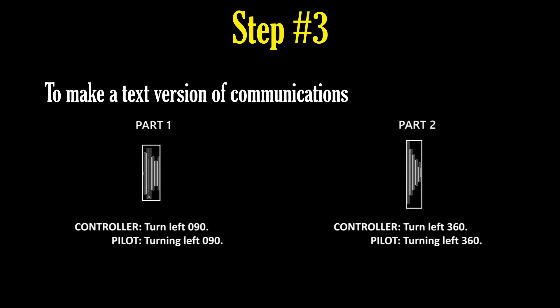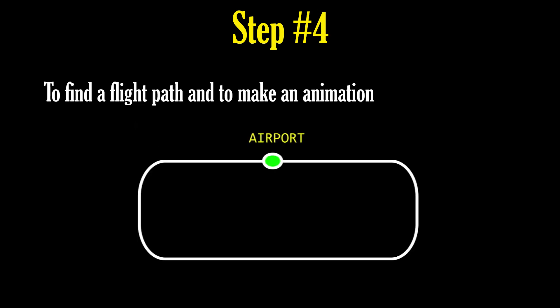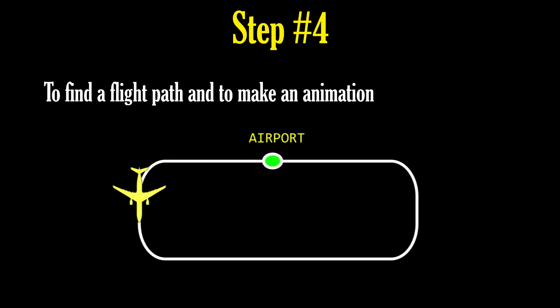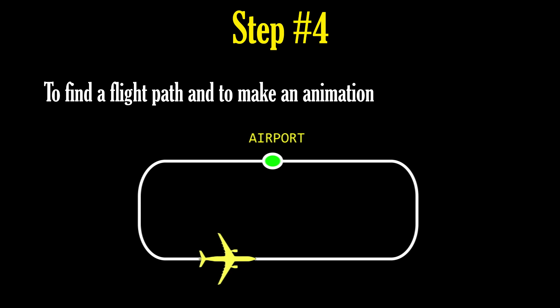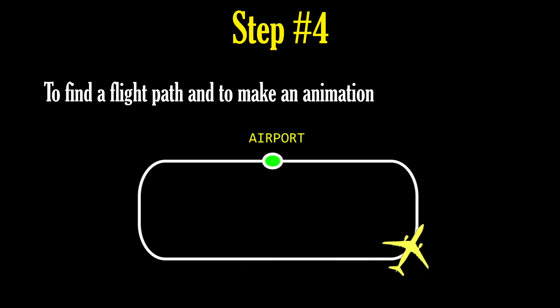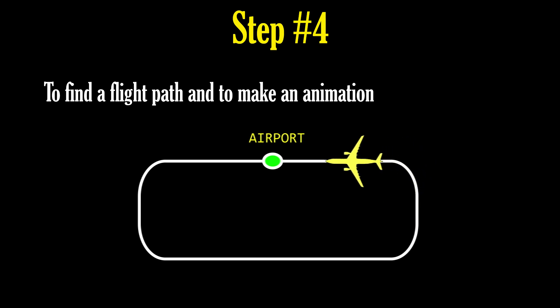Sometimes this is difficult due to unclear speech and radio interferences. Step number four: I find the flight path of the aircraft and make an animation where the aircraft travels along its route. For early videos I used aerial pictures with a royalty-free license, and for later videos I've made my own radar screen.